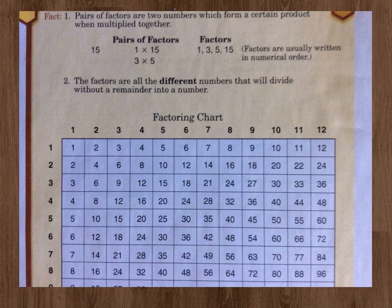This is what it looks like on the first page, 95. At the top, the fact says pairs of factors are two numbers which form a certain product when multiplied together. So we see pairs of factors here of 1 times 15 and 3 times 5. Both of those are pairs of factors. Your factors for the number 15 would be 1, 3, 5, and 15. You notice that they're written in numerical order. I'm going to put another number up right now on this paper.